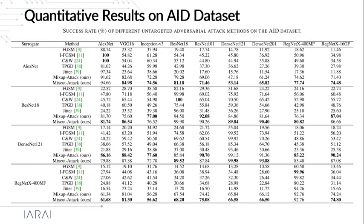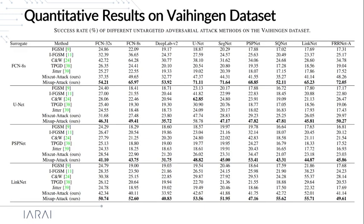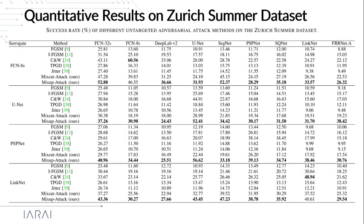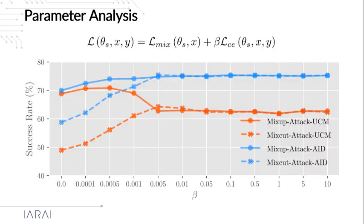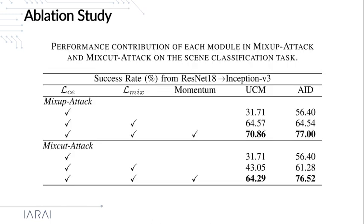On other datasets, we can observe similar results. This is a parameter analysis for the weight parameter beta used in the attack. We also conduct an ablation study to evaluate how each module in the proposed method influences attack performance. It can be observed that using the traditional cross-entropy loss alone leads to a limited success rate, while the proposed mixed loss can significantly improve performance. Finally, with the help of a momentum technique, the success rate can be further improved.